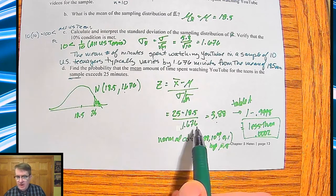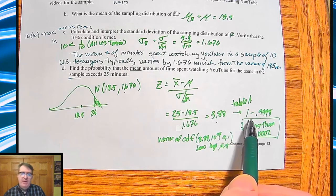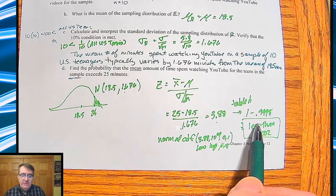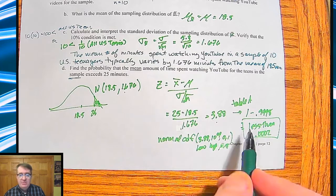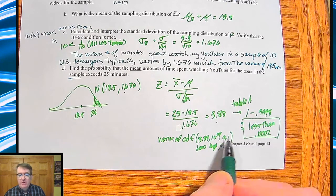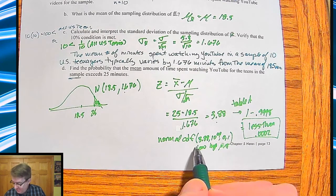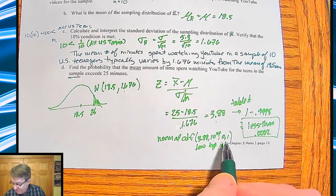But anyway, so here, you get 3.88, by table A that's 0.9998. So the probability of this happening is going to be less than 0.0002. You get something similar here if you run the normal CDF for 3.88 by table A.